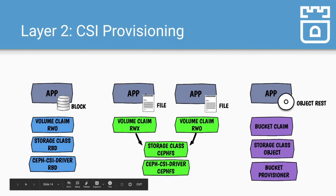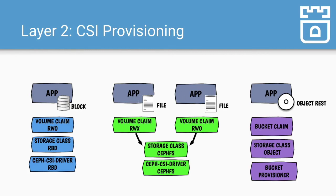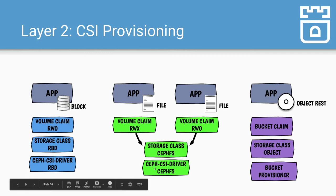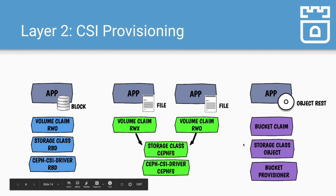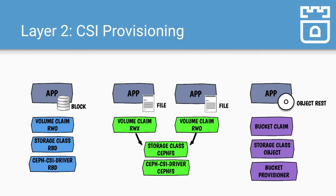Something very similar happens for shared file system, where two applications need to share the file system — they both have their persistent volume claims, and the CSI driver for the shared file system mounts that storage. The third type of storage is object with the S3 endpoint. We've exposed it in a way consistent with block and file storage: if you want object storage, you want a bucket, so you create a bucket claim, which requests storage from the storage class crafted for object storage. A bucket provisioner then creates a bucket in the Ceph object storage and provides it back to the application.